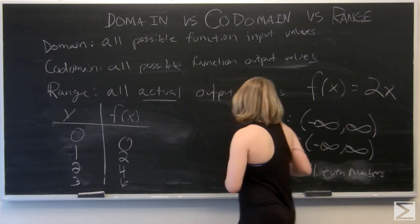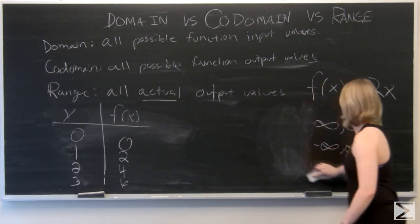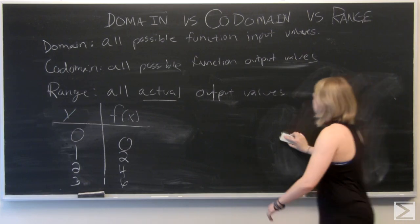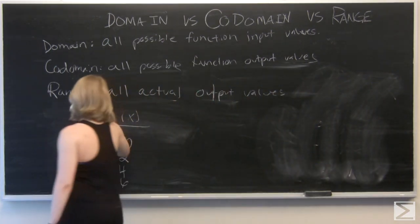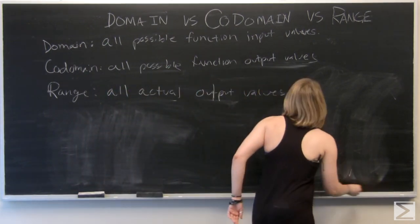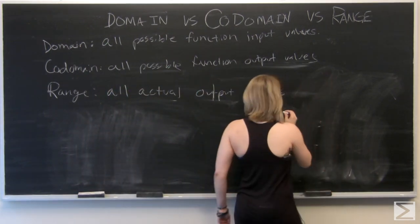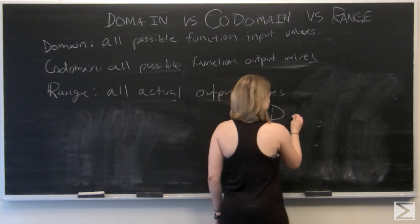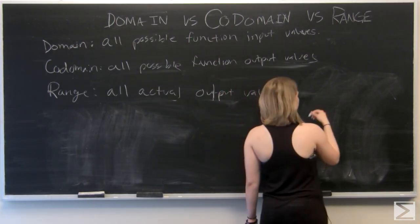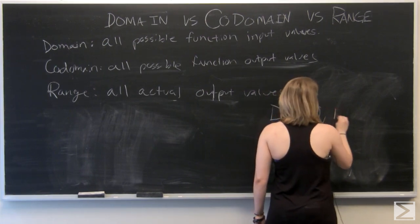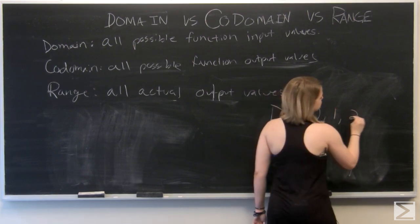So let's do another example here. This time we're going to define our domain as all of the whole numbers. So we'll start at 0 and go to 1, 2, 3. So our domain is the set of whole numbers.